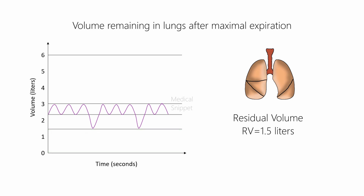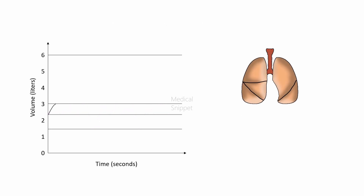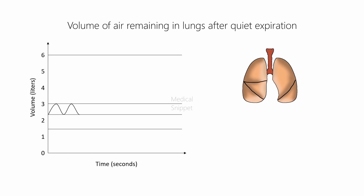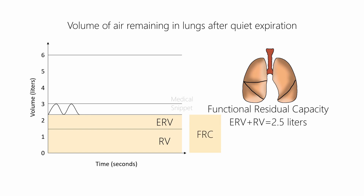Now let's see about the lung capacities. The volume of air remaining in the lung after a normal expiration is called functional residual capacity. That is equal to the expiratory reserve volume plus the residual volume, which is about 2.5 liters.